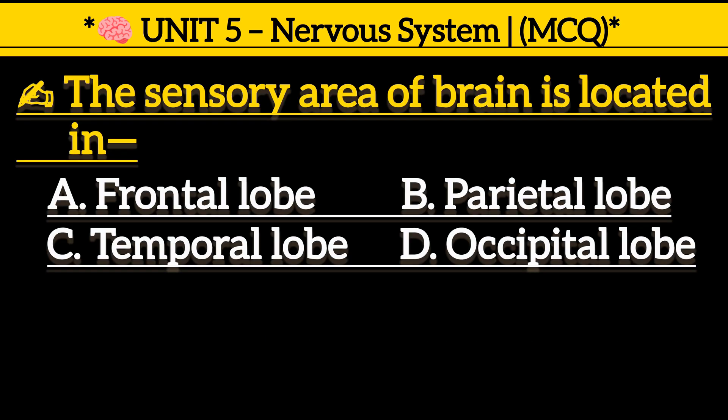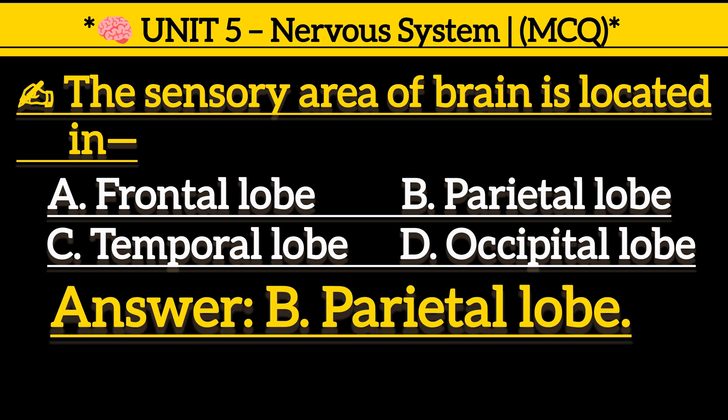The sensory area of the brain is located in: Option A, frontal lobe. Option B, parietal lobe. Option C, temporal lobe. Option D, occipital lobe. Correct answer is Option B, parietal lobe.